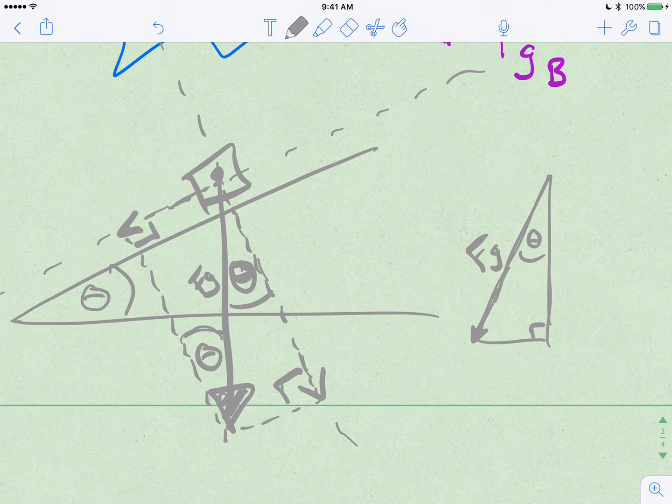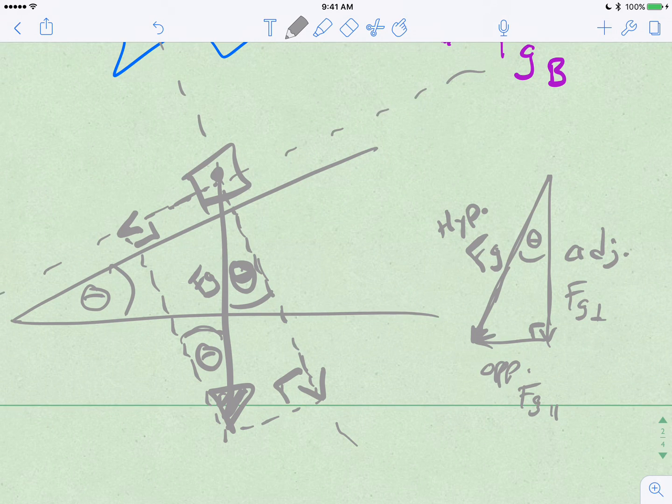So then this side would be the adjacent side in geometry class. And this side would be the opposite side in geometry class. And then this side would be the hypotenuse. And the adjacent side is a component of the weight that is perpendicular to the surface. The opposite side is the component of the weight that is parallel to the surface of the ramp.